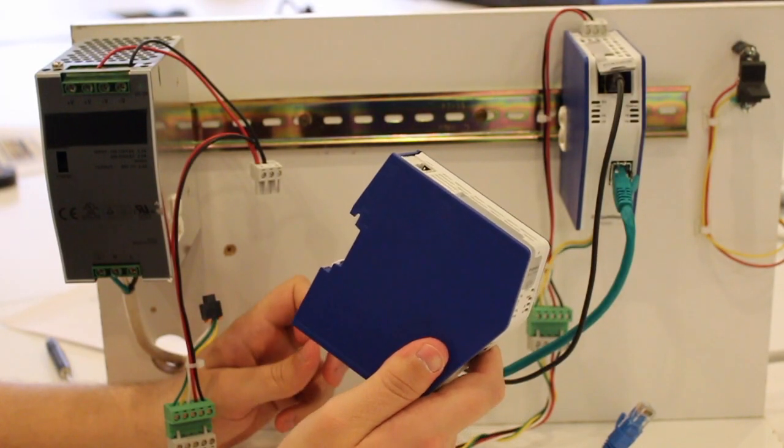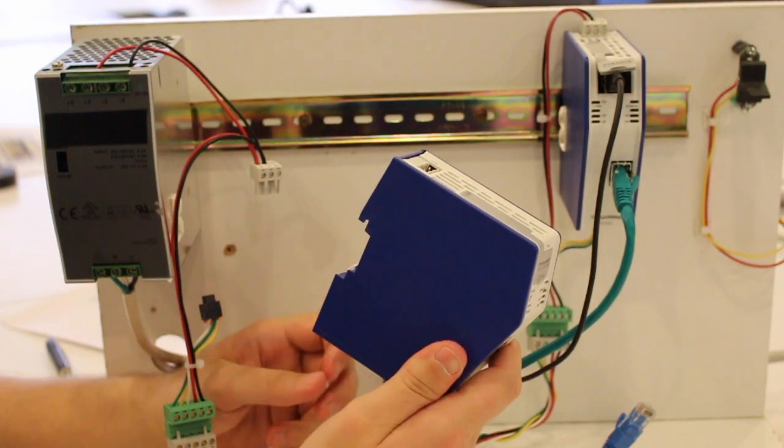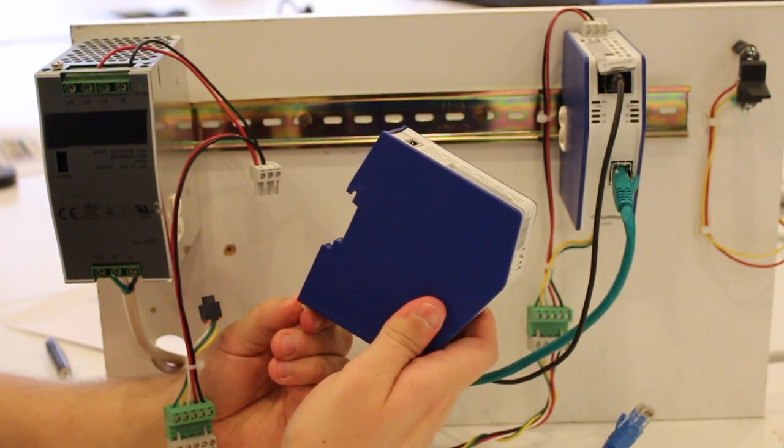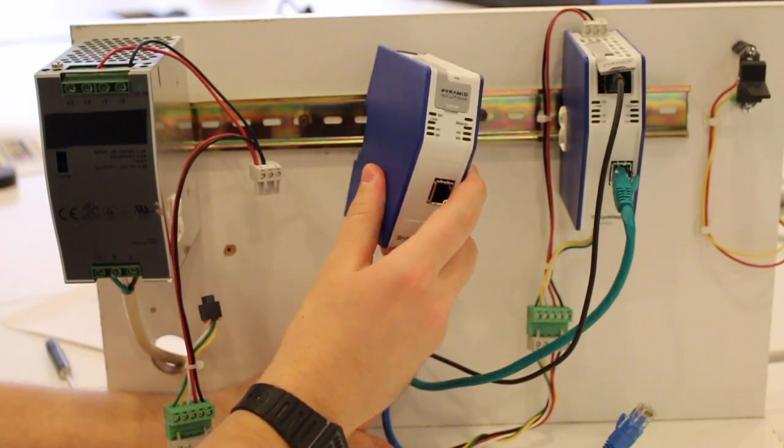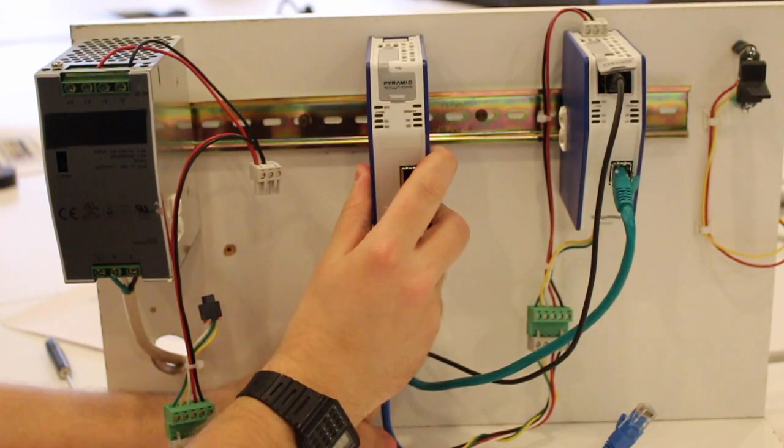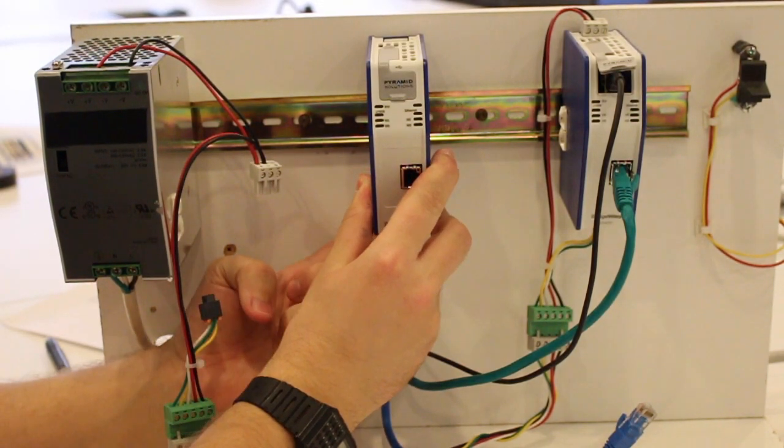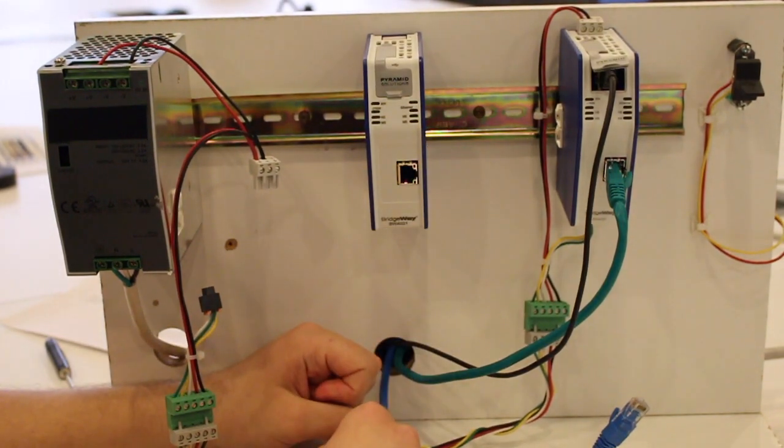You are now ready to mount your Bridgeway to the DIN rail. First, open the DIN rail mount locking tab on the back of the device. Hook the device onto the DIN rail top first, push it all the way down, and then push the locking tab up.